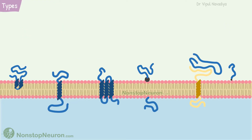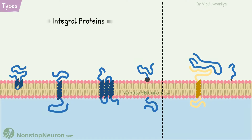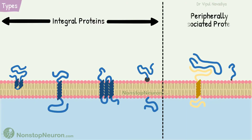Membrane proteins, as per the name, are proteins that are found at the cell membrane. Broadly they are of two types: integral membrane proteins and peripherally associated membrane proteins.